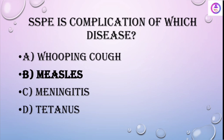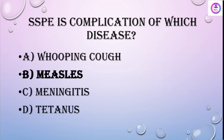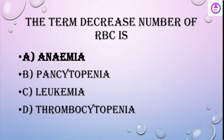SSPE is a complication of measles. The full form of SSPE is Subacute Sclerosing Panencephalitis. The term for a decreased number of RBCs is anemia.